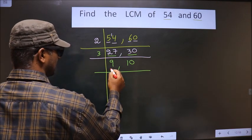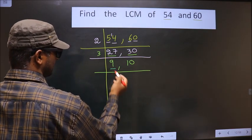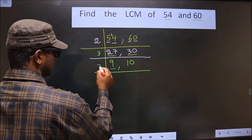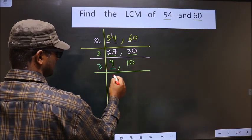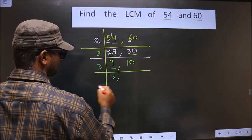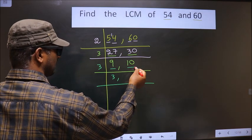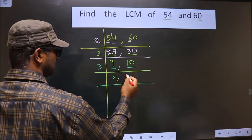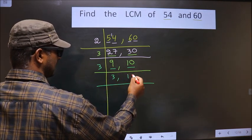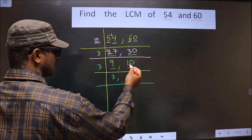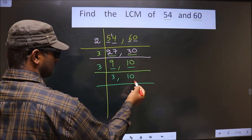Now here we have 9. 9 is nothing but 3×3. 10 is not divisible by 3, so you write 10 as it is down.